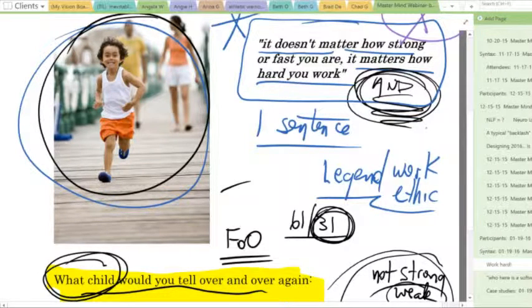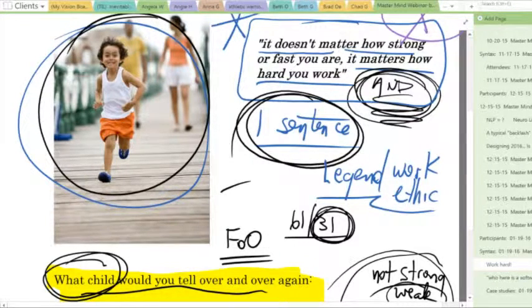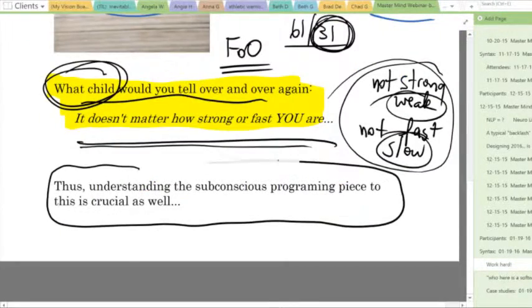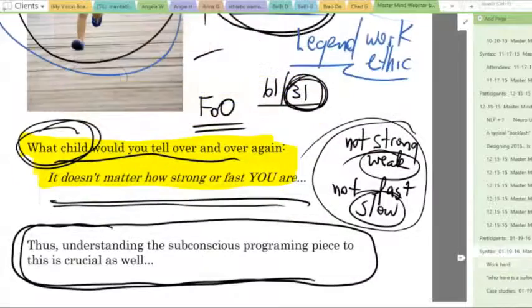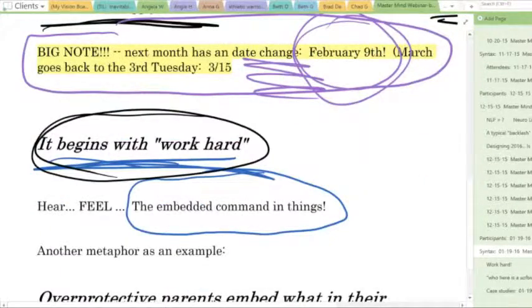Now, if you're not strong and fast, you've got to come up with the right one sentence that has a great embedded command in it. But then you're into conscious programming. And this is always subconscious programming. So this content always begins with the work hard.